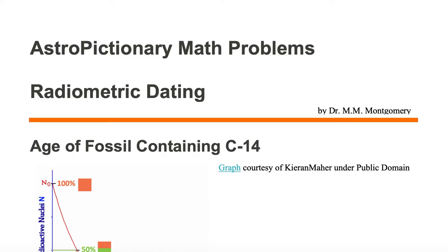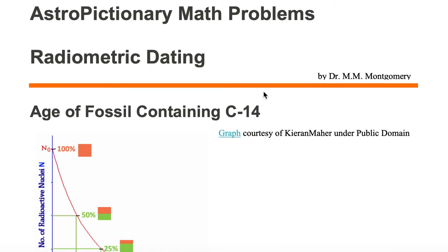In this astro-pictionary math problem, we're going to go over radiometric dating. Specifically, we're going to calculate the age of a fossil that contains carbon-14.